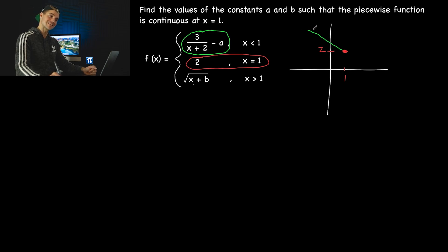For it to be continuous at x equals 1, we know that the limit of this green function as x approaches 1 from the left side has to equal 2.